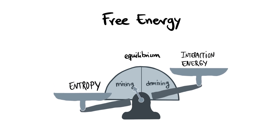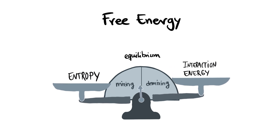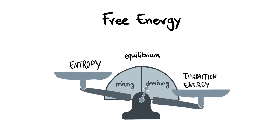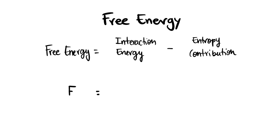If we think about phase-separating mixtures, entropy favors mixing and interaction energy can cause systems to separate into coexisting phases. The free energy is precisely the difference between these two competing contributions.